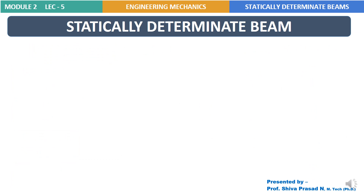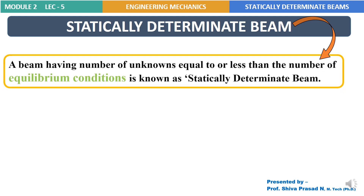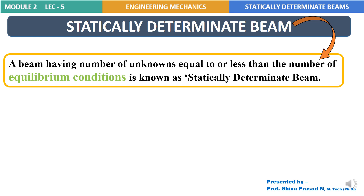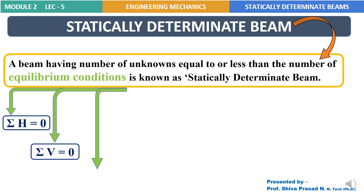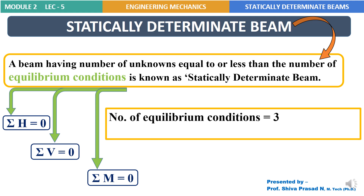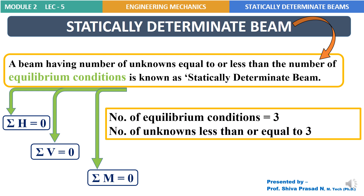Having learnt all these things, we have now reached a stage to define a statically determinate beam. A statically determinate beam is a beam having a number of unknowns equal to or less than the number of conditions of equilibrium. For a non-concurrent force system, there are 3 equilibrium conditions: algebraic sum of all horizontal forces equal to 0, algebraic sum of all vertical forces equal to 0, and algebraic sum of all moments at any point equal to 0. So for a statically determinate beam, the number of unknowns should be less than or equal to 3.